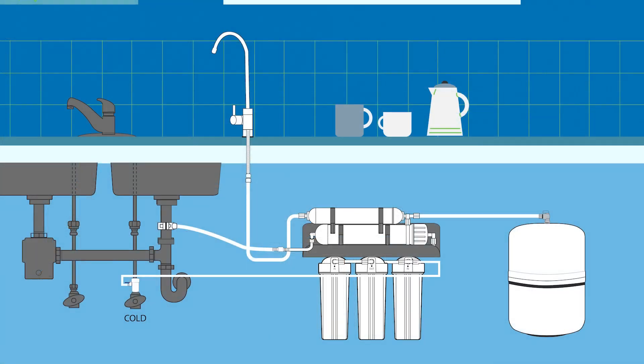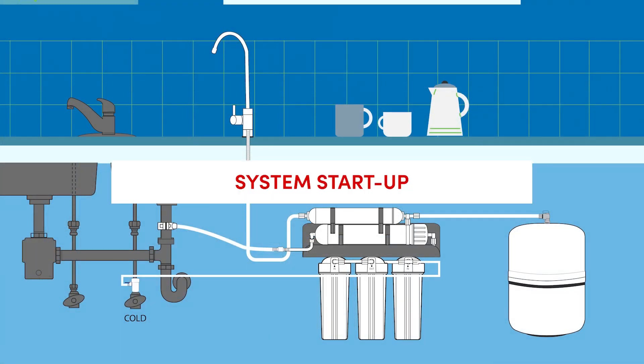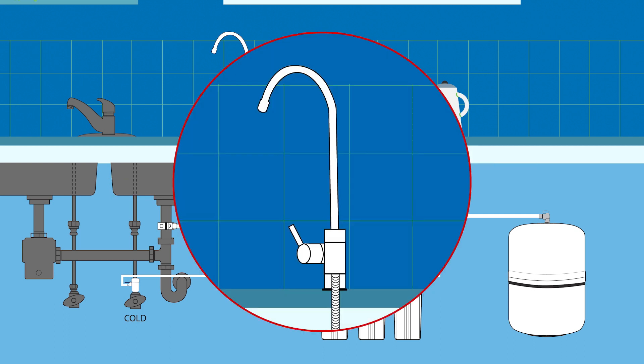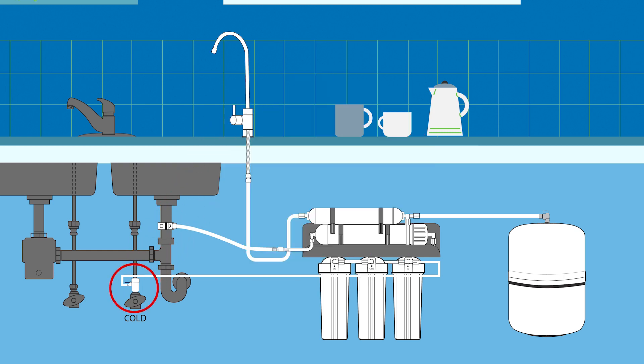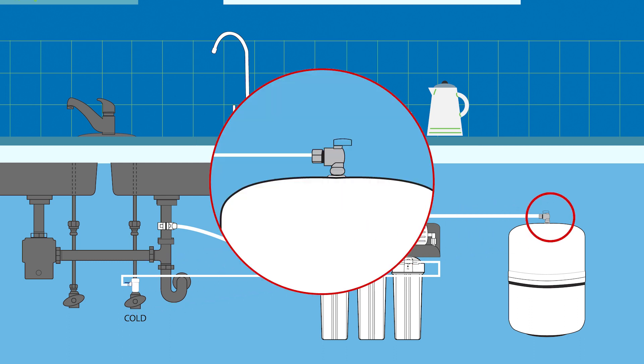When all connections are done, you can continue to system startup. To begin, make sure the RO faucet is turned off. Now turn on the main cold water supply valve and ensure that the quarter-inch water supply valve to the RO system is in the open position. Check the ball valve on top of the tank and make sure that it is in the open position.